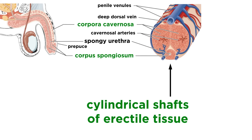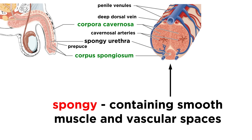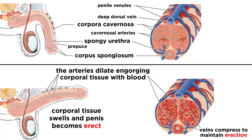The penis contains three cylindrical shafts of erectile tissue, each covered by dense fibrous connective tissue. The erectile tissue is spongy, containing smooth muscle and vascular spaces, and when these spaces fill up with blood during sexual arousal, the penis will enlarge and harden, a status called erection, which enables penetration.